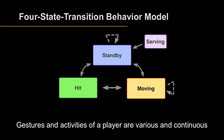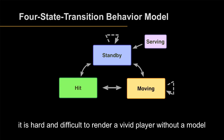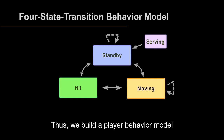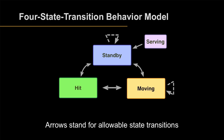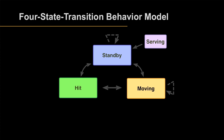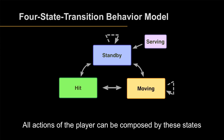Gestures and activities of the player are various and continuous, making it hard to render a vivid player without a model. Thus, we build a player behavior model consisting of serving, standby, hit, and moving states. Arrows represent allowable state transitions, and all actions of a player can be composed by these states.